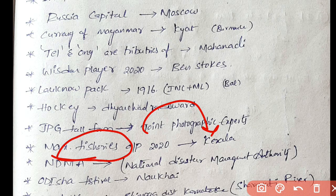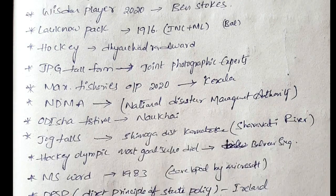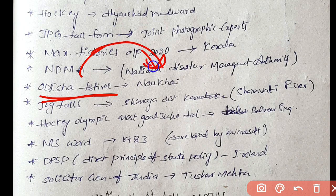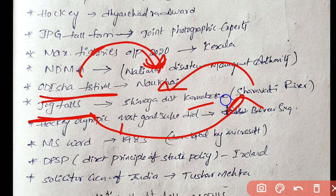NDMA full form, check every shift. NDMA full form is National Disaster Management Authority. Odisha festival is Nuakhai. Jog Falls is located on Sharavati River in Shimoga district, Karnataka.